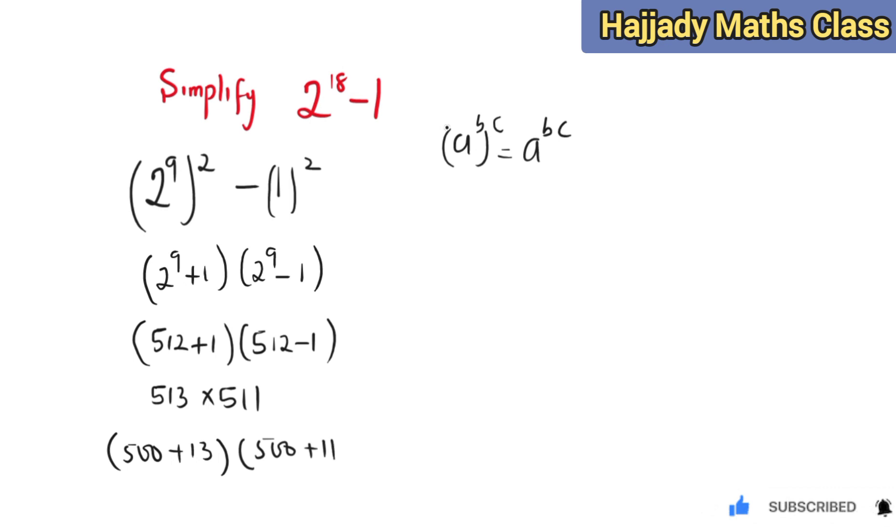This is the same as saying 500 multiply by 500, plus 13 multiply by 500, plus 11 multiply by 500, plus 11 multiply by 13. So here we can have 500 multiplied by 500, which is 5 times 5 is 25 and we have 4 zeros, that is the 2 zeros combined together.